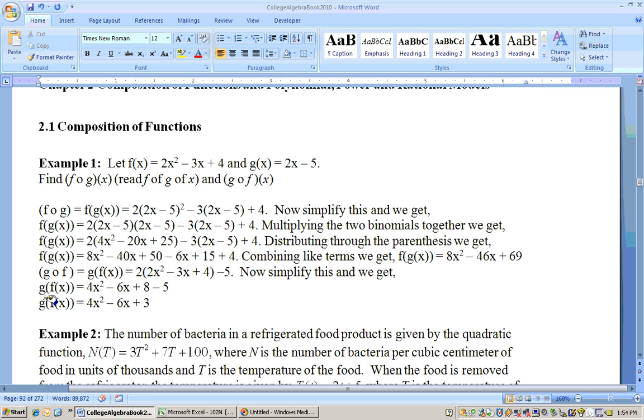If you composite this function the opposite way and do g(f(x)), that means put the f(x) function into the g function. So I'd need to put this right over here for x, so it would be 2 times that stuff, the 2x squared minus 3x plus 4, close parentheses, minus 5.